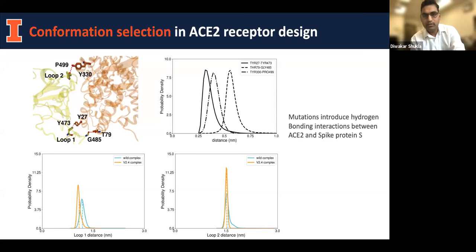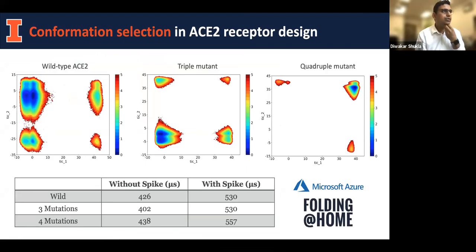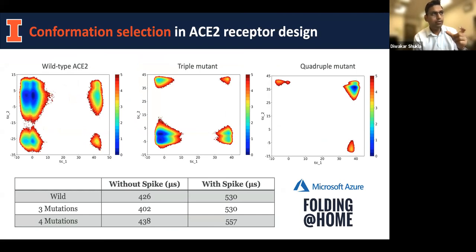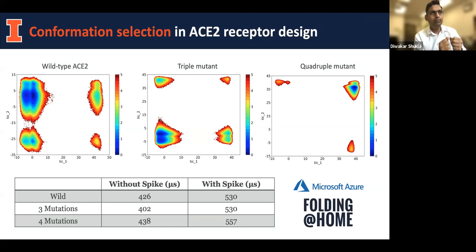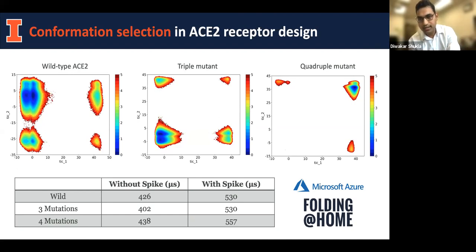Looking at time-independent components — the two slowest binding processes — the wild-type protein in binding can exist in many different conformations. But with our triple or quadruple mutants, all the weak binding states are eliminated and a single dominant, highly stable interface emerges. These mutations are strategically placed to lock the interface, giving very strong binding. These long simulations were done on Azure and Folding@home.